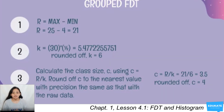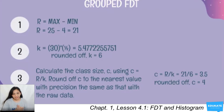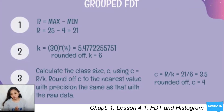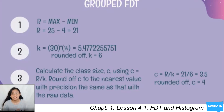The third step is to calculate the class size, c, which determines the range of values for each row. It is computed as c equals r over k — divide the range by the number of classes: 21 divided by 6 equals 3.5. Again, we round up, so our class size c is 4.